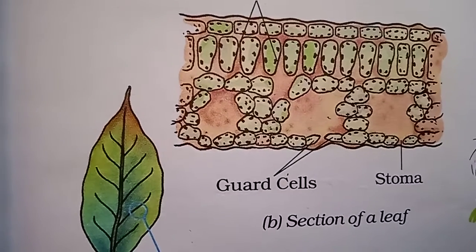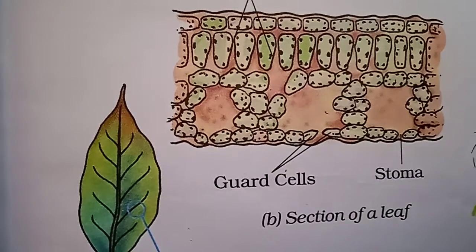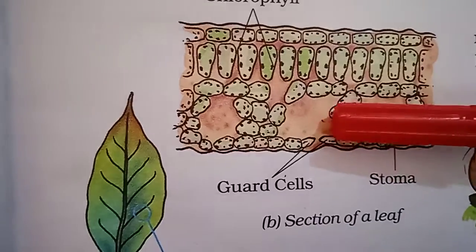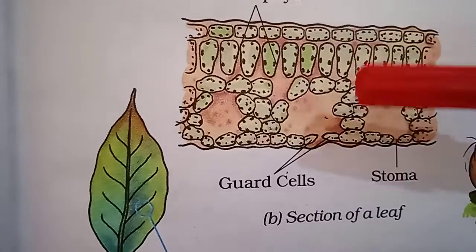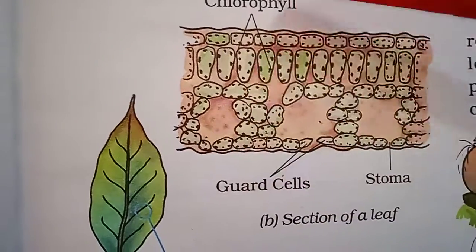This is the cross section of the leaf's guard cells. This stoma, or stomatum, is surrounded by the guard cells. This is the chlorophyll.